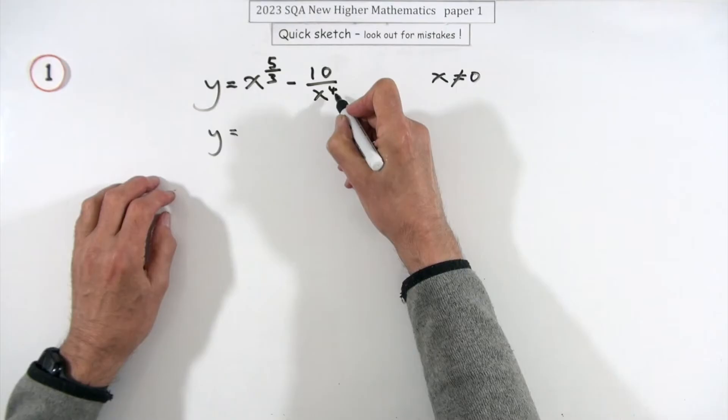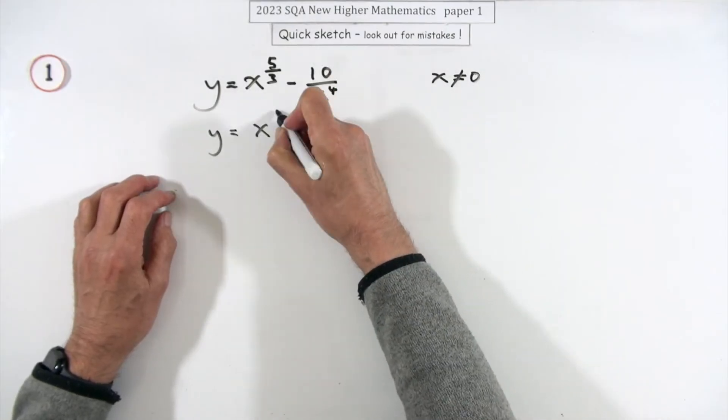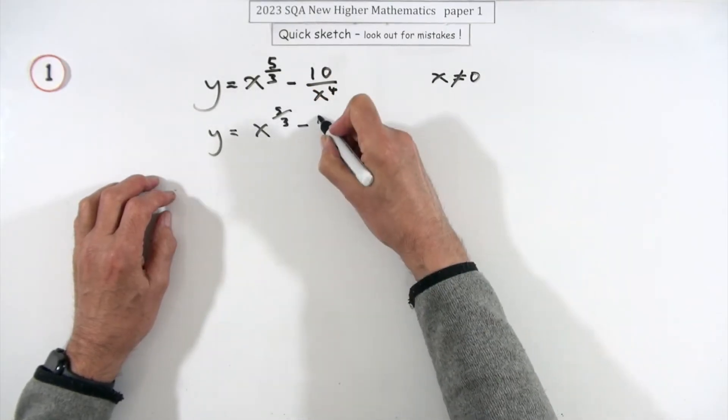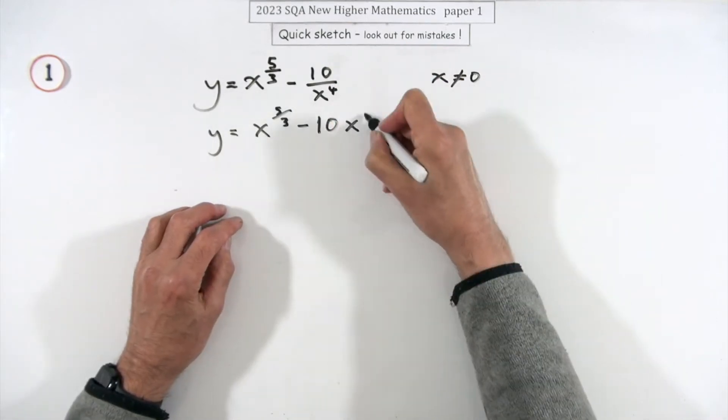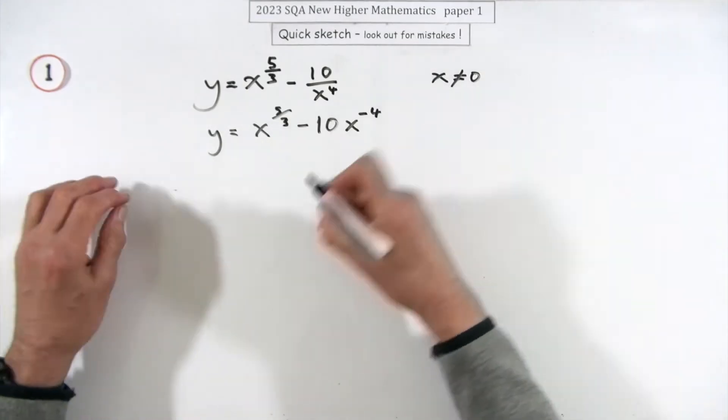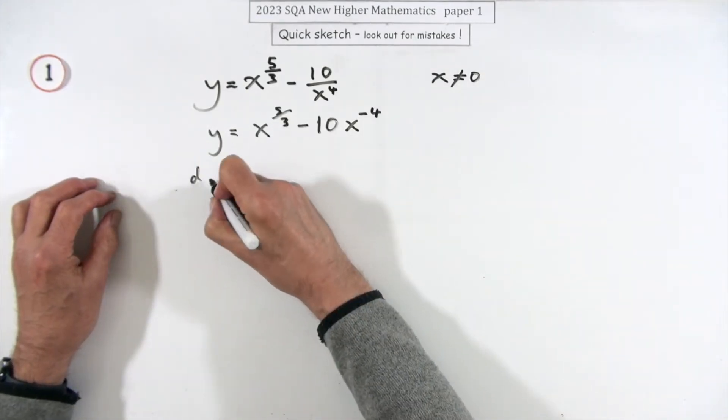But that one you should really put into a more recognizable form for you where the 10's got nothing to do with the power, so the x coming on top makes that a power negative four. Presumably that's one of the marks. Now you just differentiate.